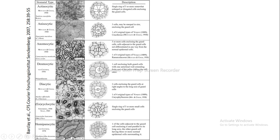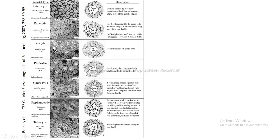Hemiparacytic means one adjacent subsidiary cell encloses one guard cell with the longer axes of both cells parallel to each other, while the other guard cell is surrounded by three or more normal epidermal cells. So only one specialized subsidiary cell encloses one guard cell, while the other guard cell is not encircled by any specialized subsidiary cell — it is surrounded by normal epidermal cells.